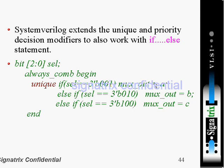In the example, 'max_out' is assigned to 'a', and all branches will execute in parallel because the select values are mutually exclusive. This is the enhancement of the if statement in SystemVerilog.